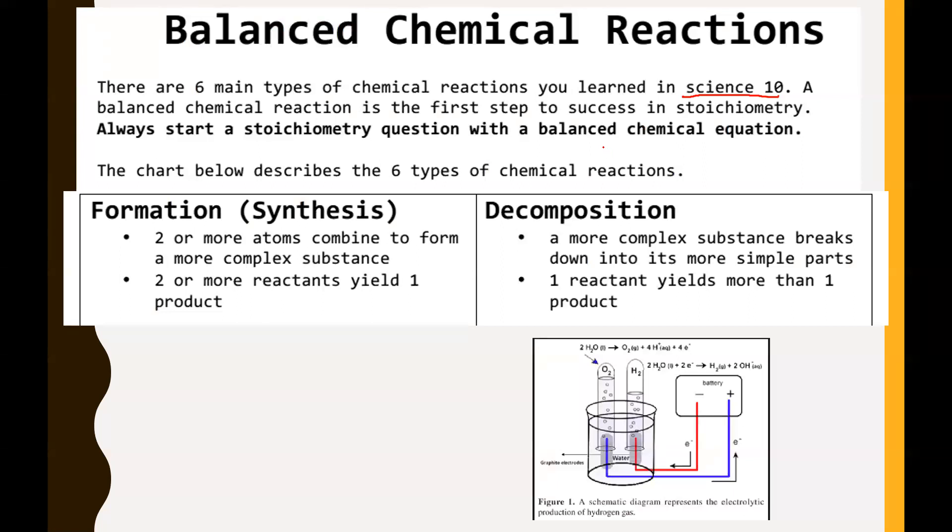A balanced chemical reaction is the first step in success in stoichiometry. You must always start a stoichiometry question with a balanced chemical equation. So in other words, the stuff that we're learning right now, chemical equation balancing, super super important. You won't be able to go anywhere without it.